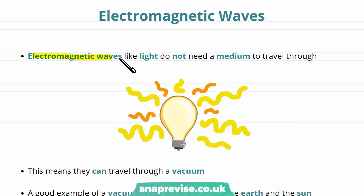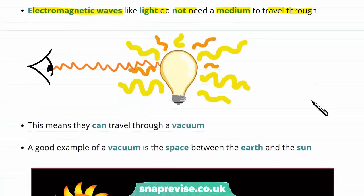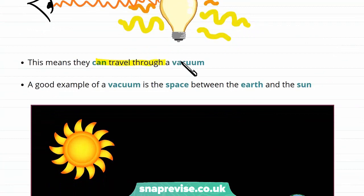It turns out that electromagnetic waves like light do not need a medium to travel through. For example, when we see a light bulb here on Earth, the light is travelling through the air between us to reach our eye. But even if the air wasn't there — if there was nothing there at all — the wave would still be able to travel from the bulb to our eye. In other words, electromagnetic waves like light can travel through a vacuum.